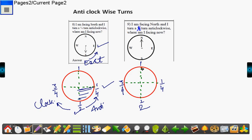So you are at north. You are here and you take half turn anti-clockwise. If I move like this, it will be clockwise. I take anti-clockwise turn here.